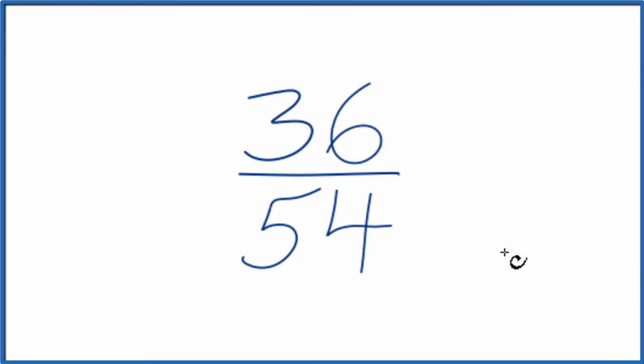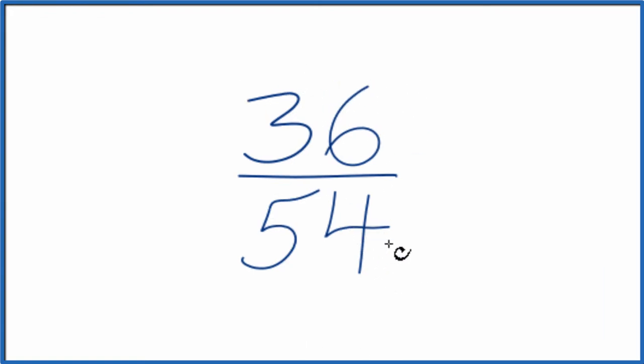To do that we need to find a factor that goes into 36 and 54. We're looking for the greatest common factor. So let's write the factors of 36 and then 54.